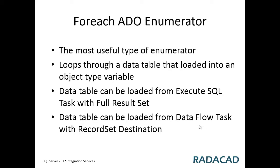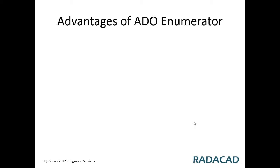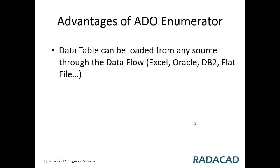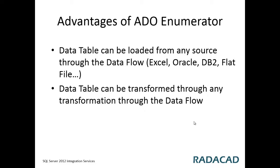The ADO enumerator is one of the most useful types of enumerators in the For Each Loop. The advantage is that the data table can be loaded from any kind of data source — Excel, Oracle, DB2, flat file, or any source you can work with in SSIS. The data can also be transformed through any kind of transformation like pivot, derived column, data conversion, or data type conversion.